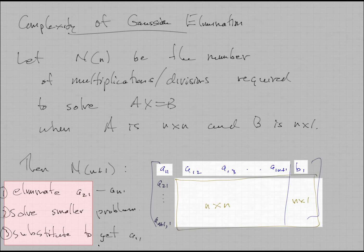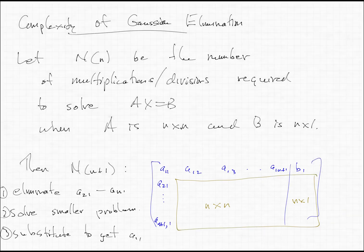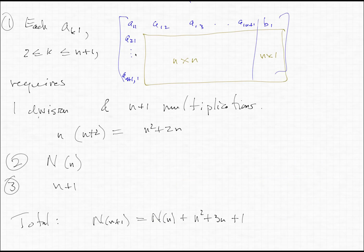So that requires a total of N plus 1 operations. So as I said, we break it down into three steps. First, eliminate the A's in the left column, solve the smaller problem, and then substitute to get the value. I shouldn't have said A11, I should have said X1 to get the value of X1. I'll fix that in the notes. Okay, so on the next page, I'll actually do the algebra here.